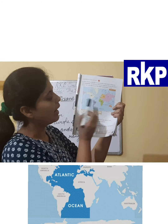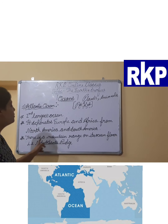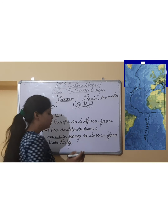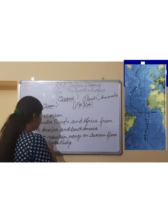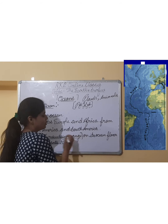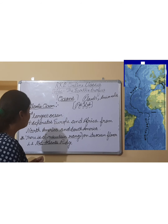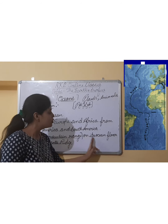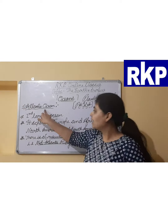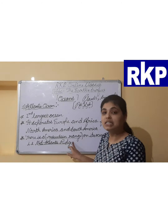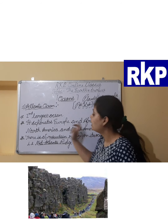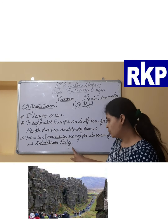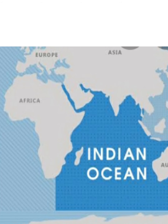The second largest ocean is the Atlantic Ocean. It is the second largest ocean, as we are discussing all oceans in descending order. It separates Europe and Africa from North America and South America. Look at the world map — you can see Europe, Africa, and the Atlantic Ocean separating them from the Americas.